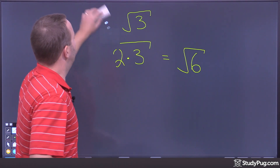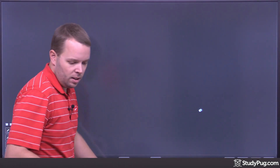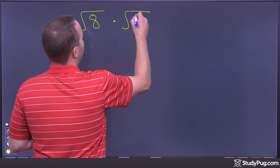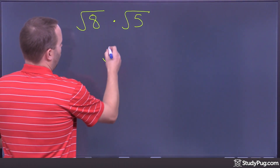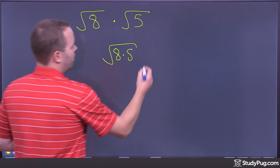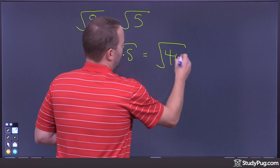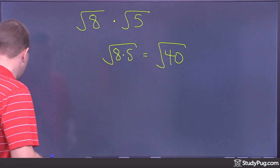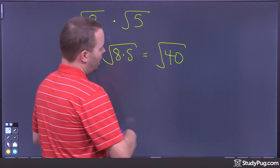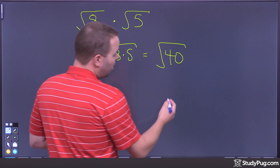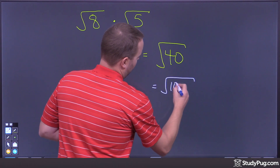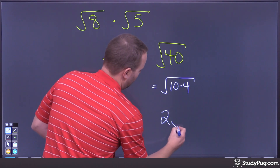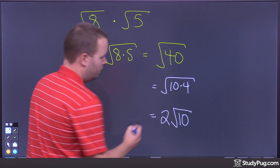Let's try one more. If I take root 8 multiplied by root 5, I get the square root of 8 times 5, which is the square root of 40. But we still have to simplify radicals whenever we can. I can write 40 as 10 times 4, so that's the square root of 10 times 4. I can take the square root of 4, which gives me 2 times the square root of 10.